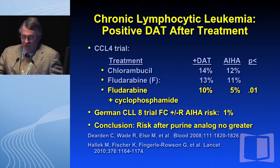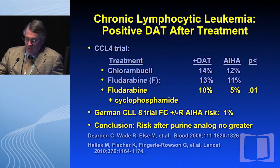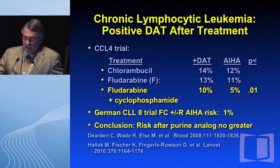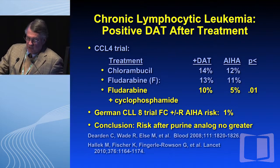In the Morrow paper there was no difference. In the Dearden data, a positive DAT had a poor response to treatment. In the CLL4 trial, patients with a positive DAT after treatment were noted. Interestingly, after fludarabine and cyclophosphamide, a positive Coombs test occurred in 10% of patients and autoimmune hemolytic anemia in 5%, statistically significantly different from the other arms. In the German CLL8 trial with FC plus or minus R, the AIHA risk was 1%. The conclusion is that the risk after purine analogs appears to be no greater.